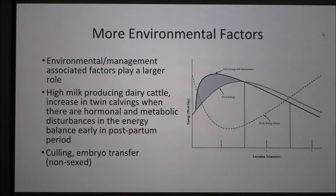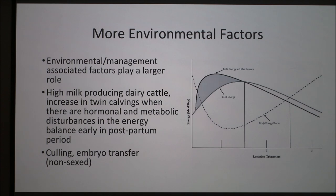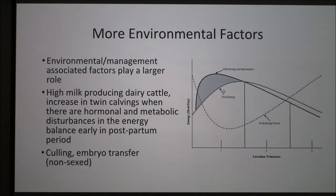Some more environmental factors: management-associated factors can play a large role. For example, high milk-producing dairy cattle have an increased rate of twin calvings when there are hormonal and metabolic disturbances in the energy balance. This is a graph of the energy balance over the course of lactation. For example, maybe they're not getting enough feed energy, or their body energy stores are too low after they've given birth, and it causes hormonal imbalances as a result.